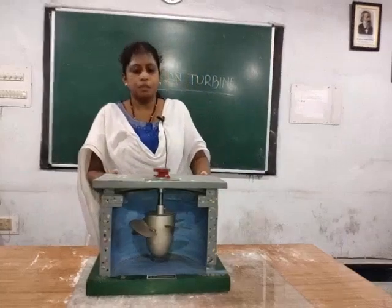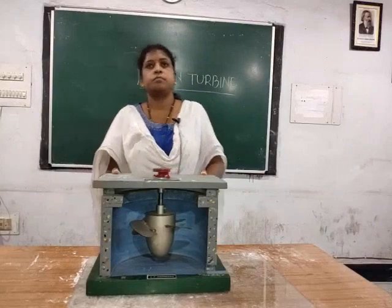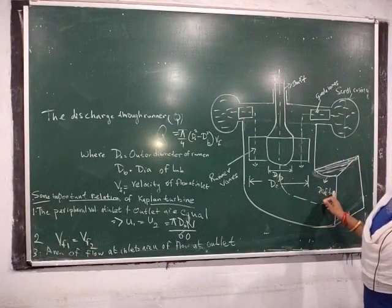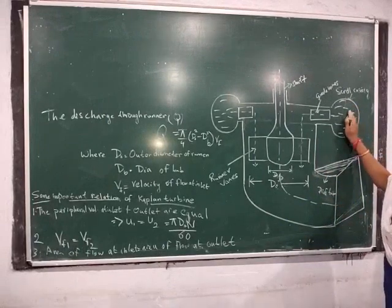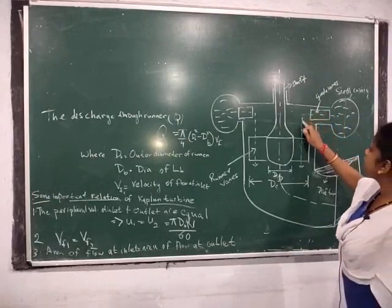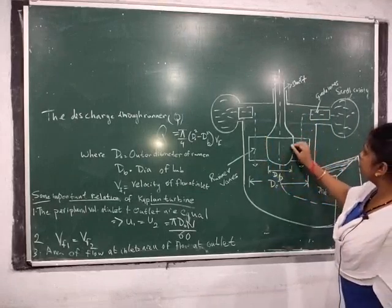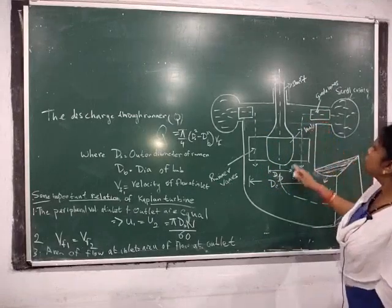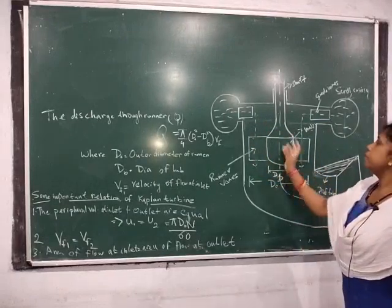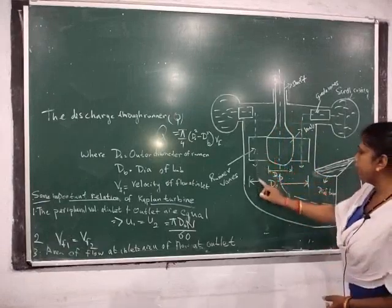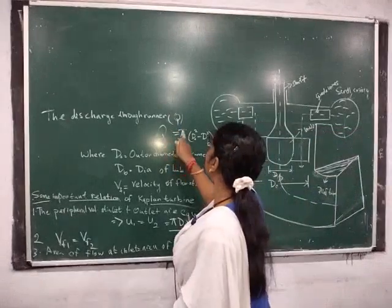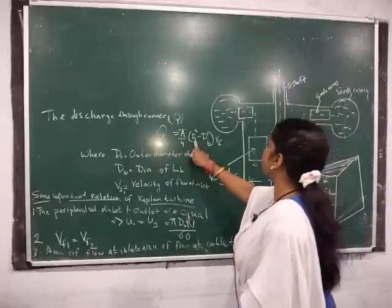Next we will see the work done in a Kaplan turbine. This diagram shows a Kaplan turbine consisting of scroll casing, guide vanes, runner, and hub. Water enters through the guide vanes to the runner vanes and rotates the shaft, then gets collected through the draft tube and goes towards the tail race. The discharge Q is given by pi by 4 times (D_o squared minus D_b squared) into V_F, where D_o is the outer diameter of the runner and D_b is the diameter of the hub.